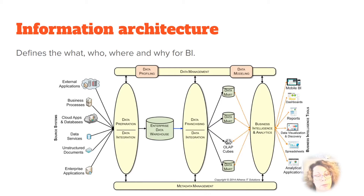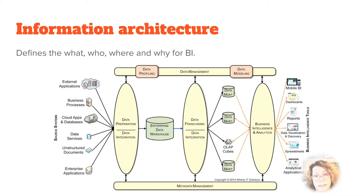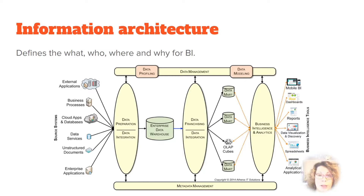The architecture is composed of data preparation that includes gathering, reformatting, consolidating, transforming, cleaning and storing that data, both in the ETL stage and in the data warehouse. Data franchising reconstructs data and information for reporting and analysis using BI tools.